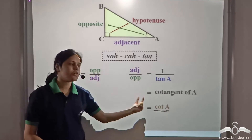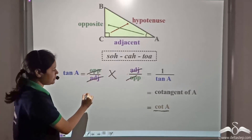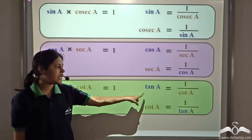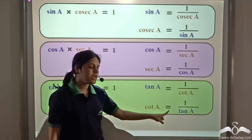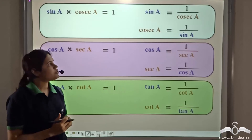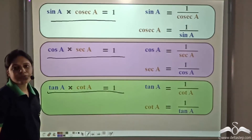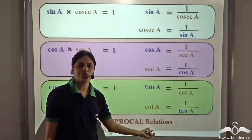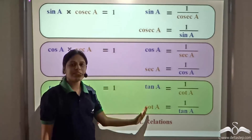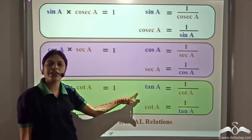It is from tangent we get cotangent. Now, if I multiply these two, opposite and opposite cancel, adjacent and adjacent cancel, and I get one. So again, we have tan A into cot A is equal to one, or tan A is equal to one by cot A, or cot A is equal to one by tan A. So, we can say that tan A and cot A are the reciprocal of each other. These three relations are called the reciprocal relations in trigonometry. Among these six ratios, these two are the reciprocal of each other, these two are the reciprocal of each other, and these two are the reciprocal of each other.